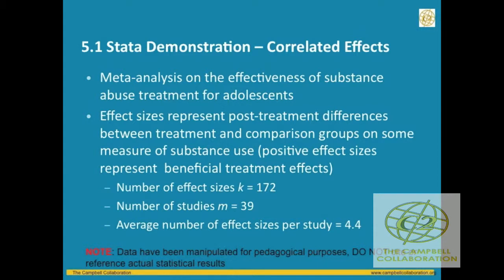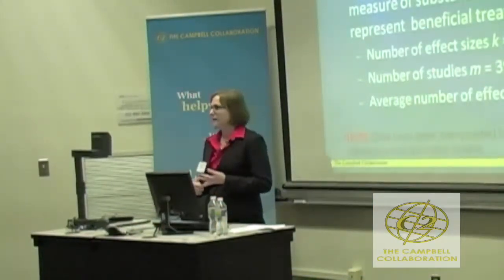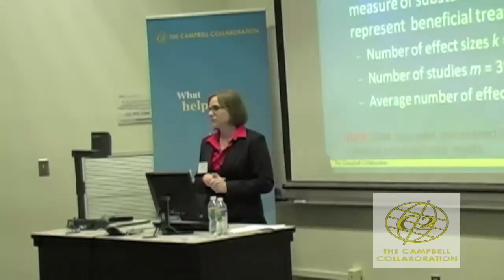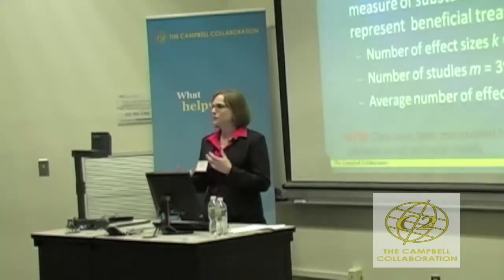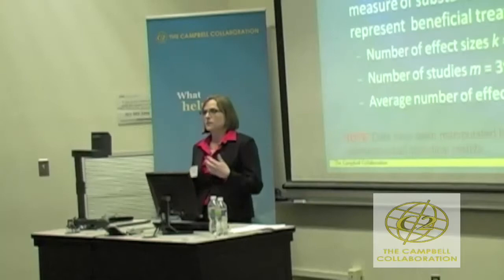All effect sizes are coded so that positive values indicate the treatment kids did better — they were using drugs less or abstaining more. In this example, we have 172 effect sizes from 39 different studies, an average of about four and a half effect sizes per study. This is common in this literature because many studies report multiple drug use outcomes: an alcohol use outcome, a marijuana outcome, a mixed alcohol and marijuana outcome, and even multiple measures within a drug type, such as frequency of use, use to drunkenness, or binge drinking.